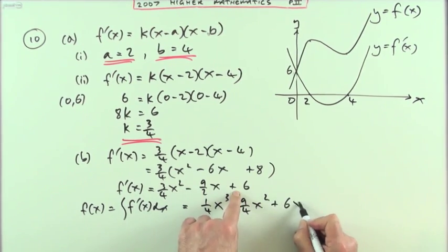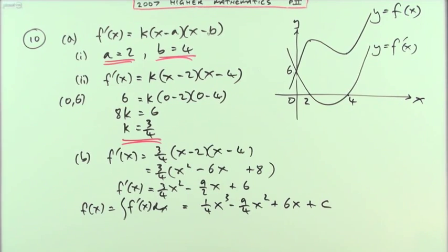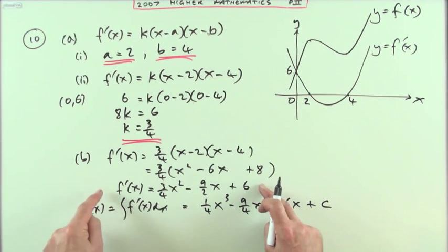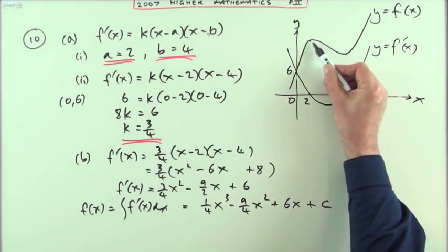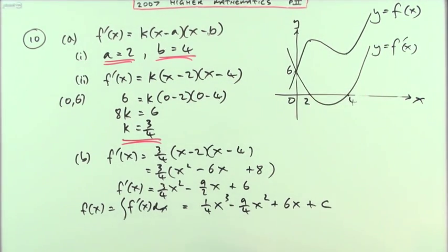Back up to a linear term. But unfortunately plus some constant which would have disappeared under the differentiation. But I know a point in this curve. It goes through the point zero six. So same as with this one. If it goes through zero six, that means the answer is six.